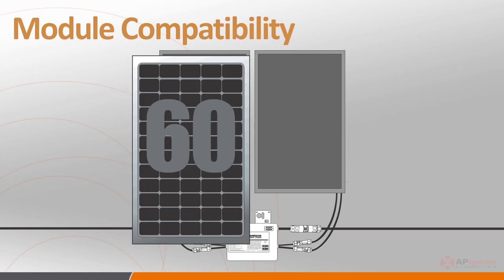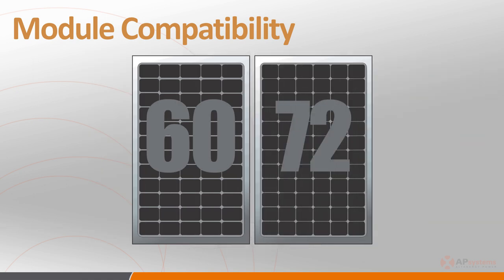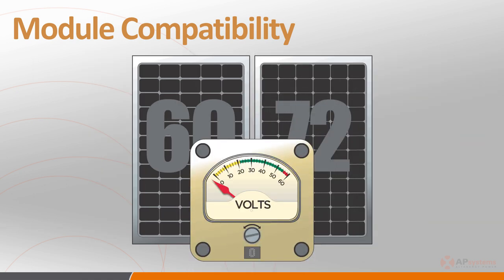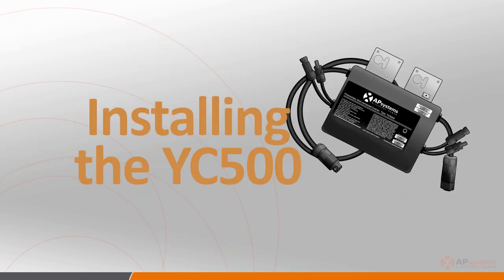The YC500 is compatible with both 60 and 72 cell PV modules, with a voltage range of 16 volts to a maximum of 55 volts continuous. It requires 22 volts to energize. Anything below that voltage level on the input side and the inverter will not power up. Okay, with all the background information out of the way, it's time to start walking through the actual installation procedures.